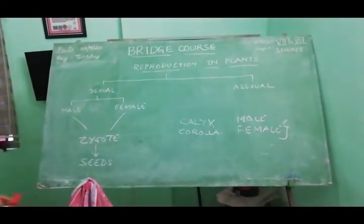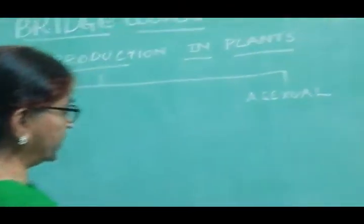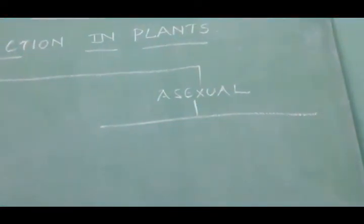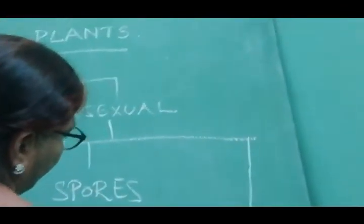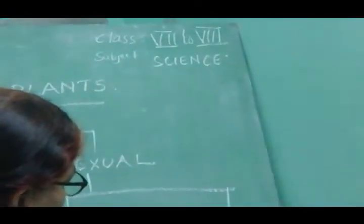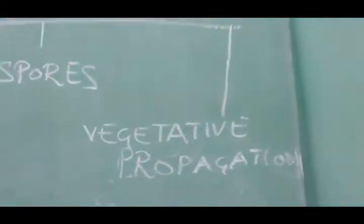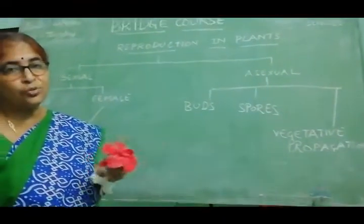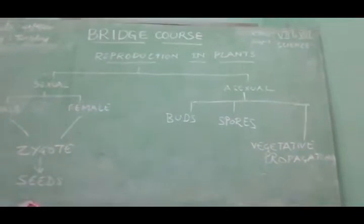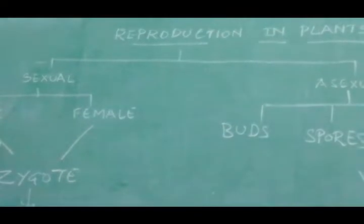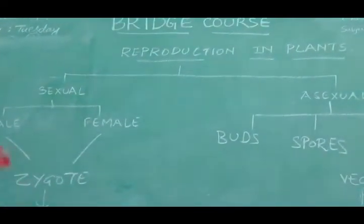The next type is the asexual method of reproduction, which consists of three systems: buds, spores, and vegetative propagation. This is a separate chapter we will deal with later. Asexual reproduction mainly takes place in plants that do not have flowers — the non-flowering plants. All flowering plants have the sexual type of reproduction where male and female gametes fuse to form a zygote, and the zygote contains seeds inside the fruit.